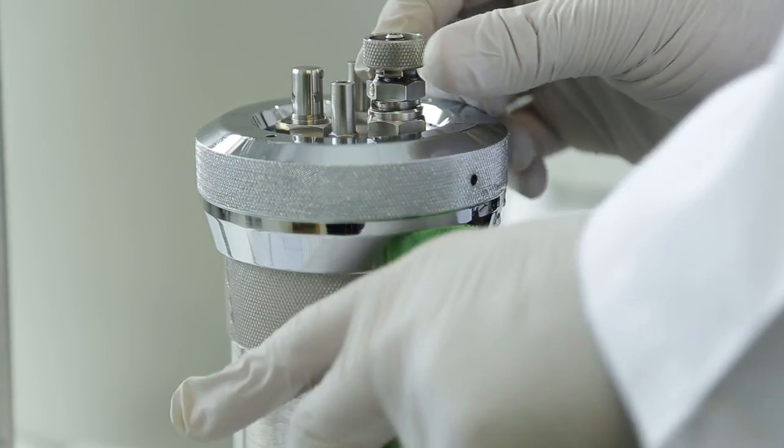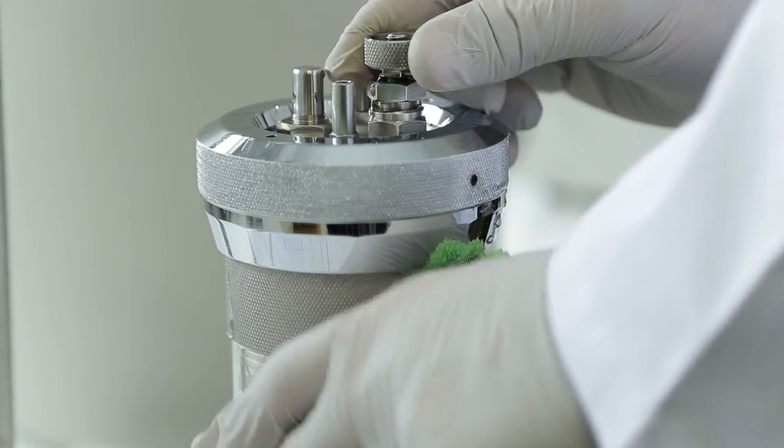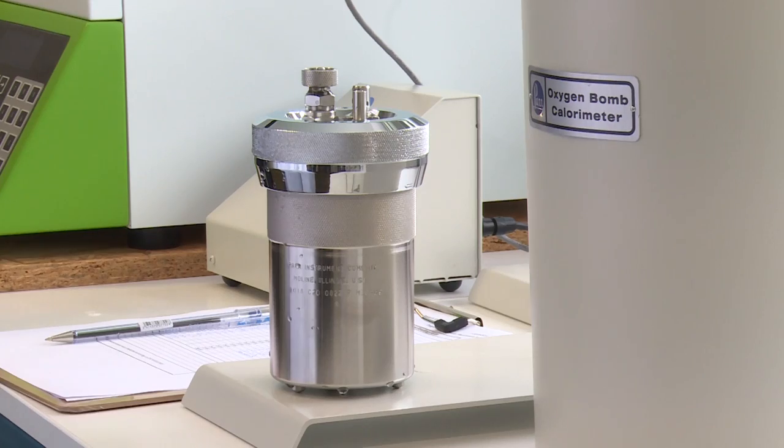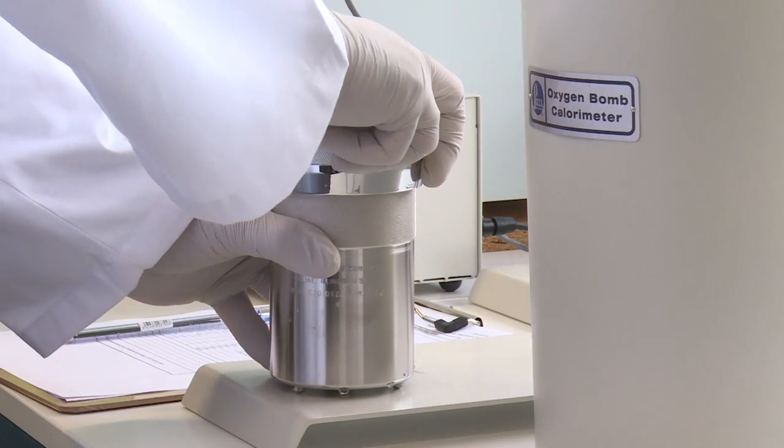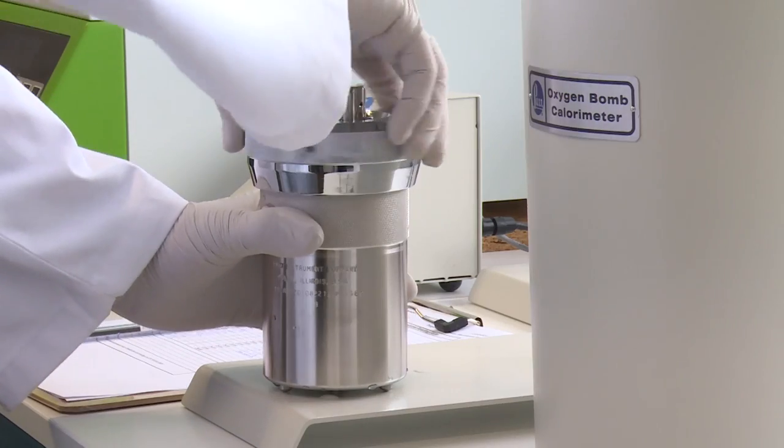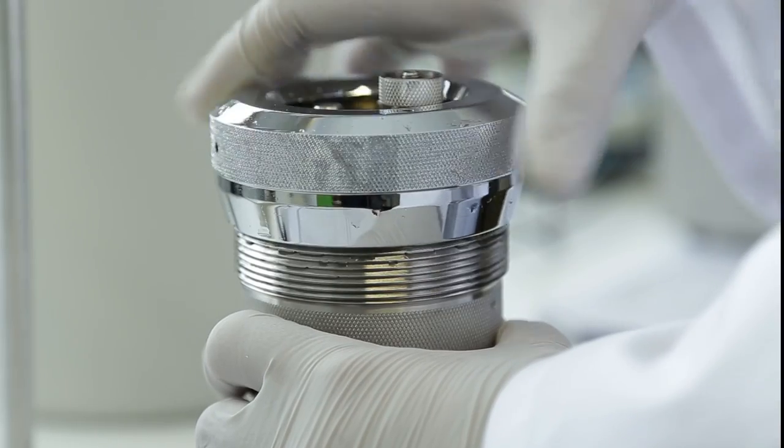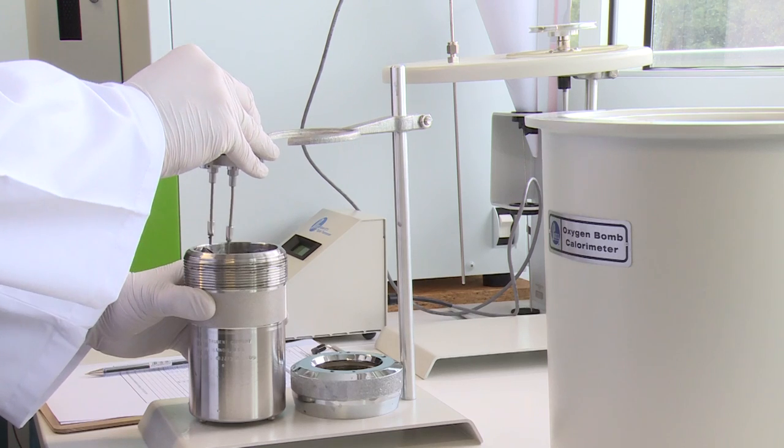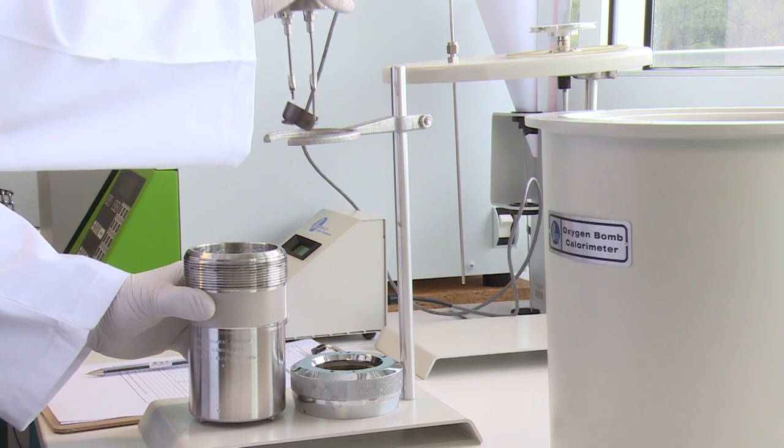Open gradually the knurled knob on the bomb head to release the gas pressure before attempting to remove the cap. After all pressure has been released, unscrew the cap. Lift the head out of the cylinder and place it on the support stand. Examine the interior of the bomb for soot or other evidence of incomplete combustion.